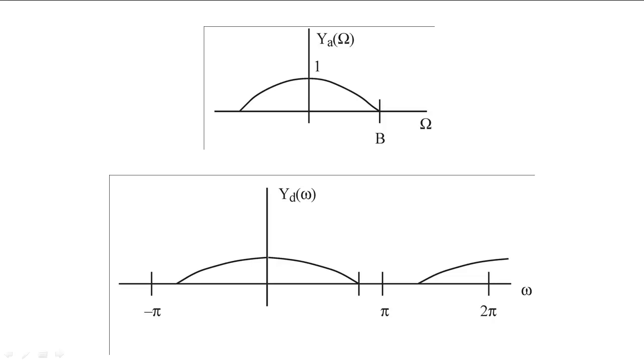First, the signal we are interpolating must be bandlimited to B radians per second.